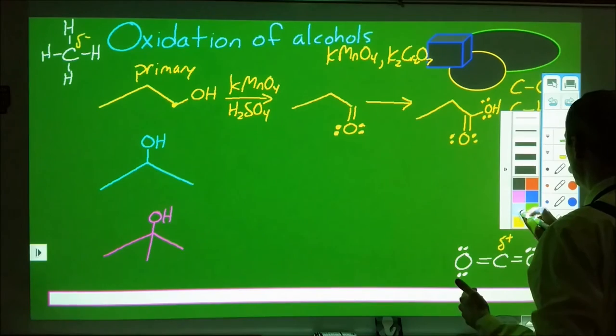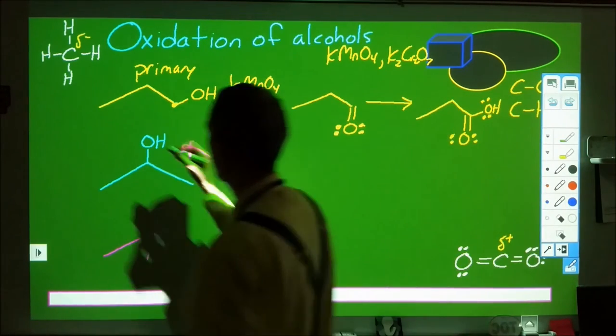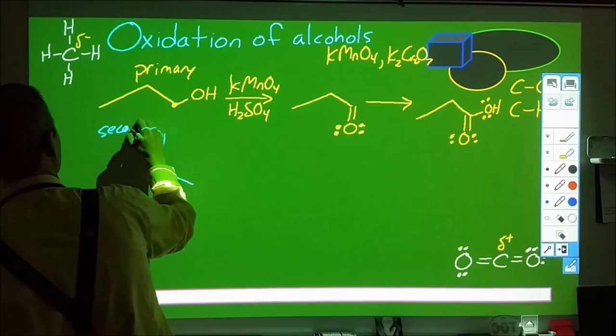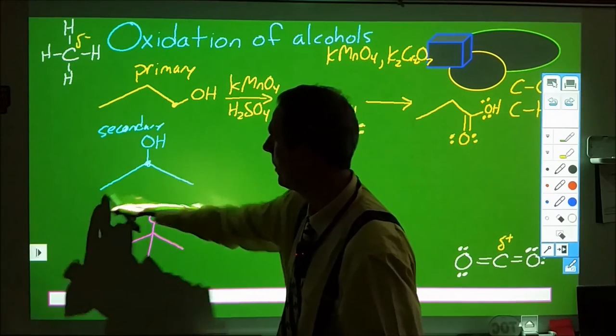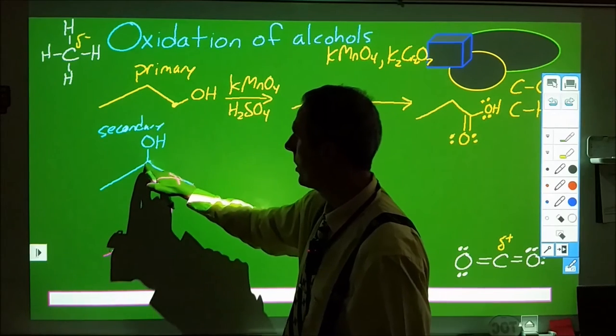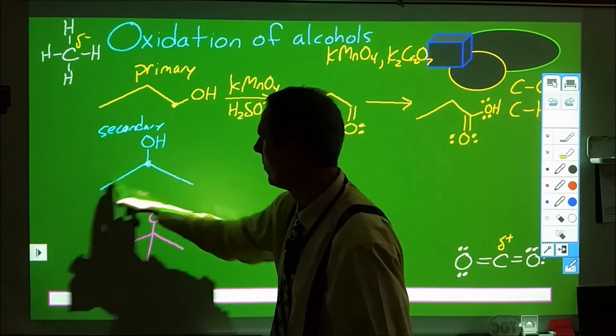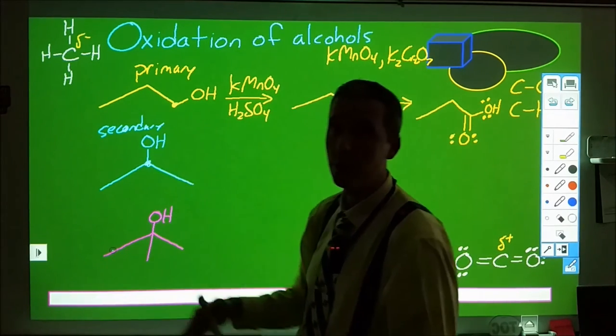Let's first look at a secondary alcohol. Secondary means we're now looking at a case where the carbon with the hydroxyl group has two different carbons bonded to it. This carbon has one bond to an oxygen, two to carbons, and one hydrogen there.